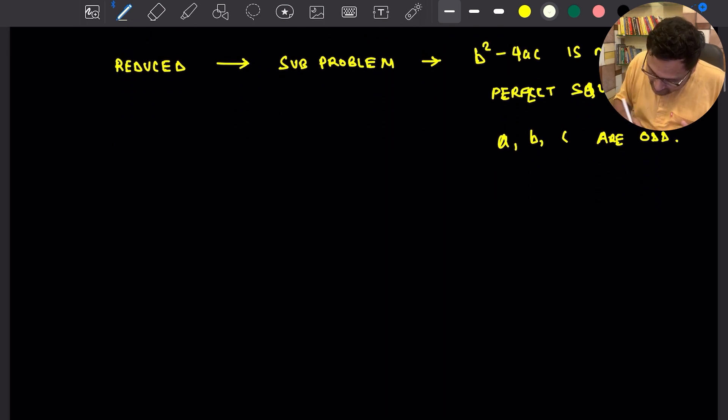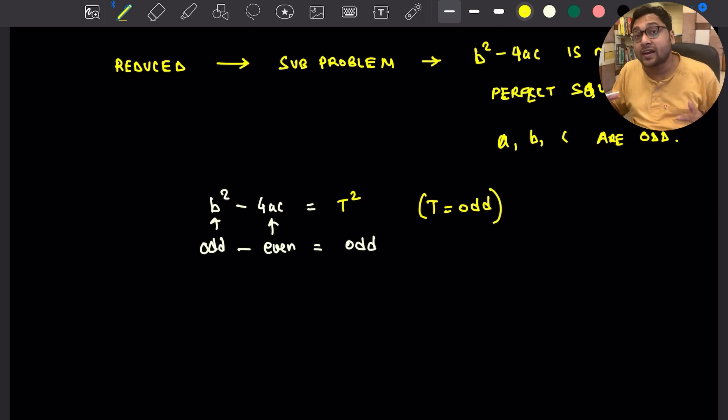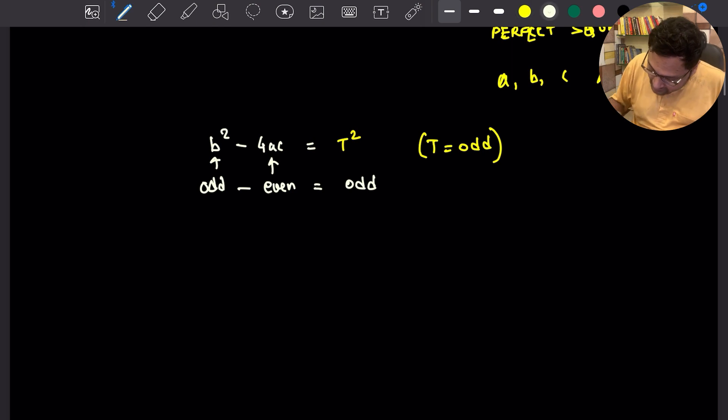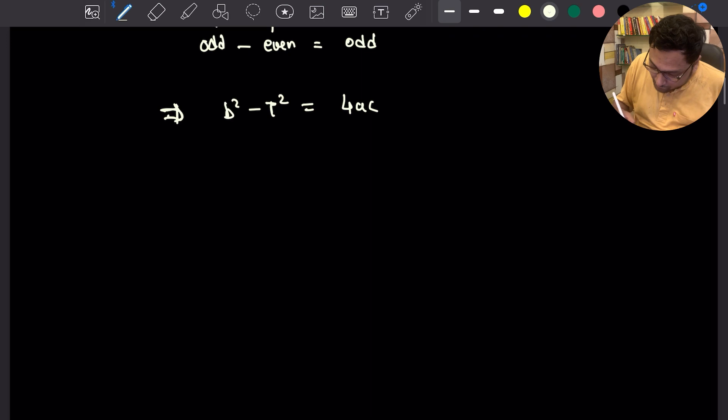Now that we have this, let's see why this is never a perfect square. B square minus 4AC, suppose it's a perfect square. Remember, B square is odd, 4AC is even. Odd minus even is always odd, which means if it is a perfect square, then it must be some odd square. If it is a perfect square, then it must be an odd square.